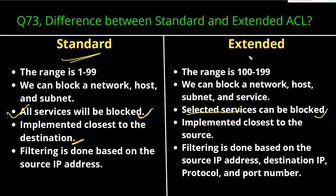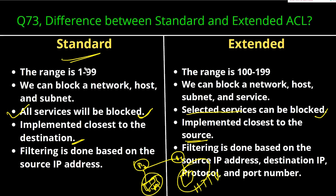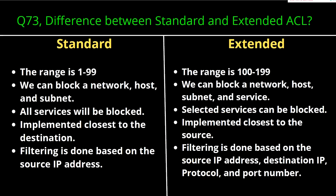Extended ACL should be implemented closest to the source. For example, with R1, R2, an HTTP server, and a client — the client is the source, the server is the destination. If you configure a standard ACL, configure it nearest to the destination router. If you configure an extended ACL, implement it nearest to the source router — on R1. This is a recommendation, not a strict rule.